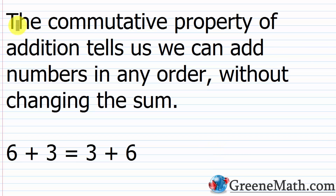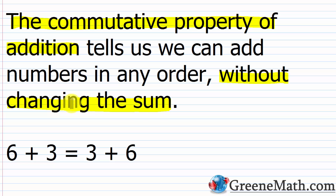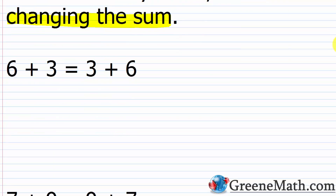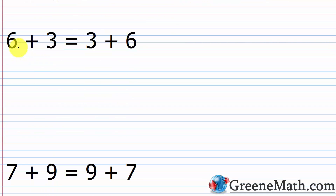The next property is the commutative property of addition. It tells us we can add numbers in any order without changing the sum — the order you add does not matter. For example, six plus three equals three plus six; the order is changed, but you get nine either way.